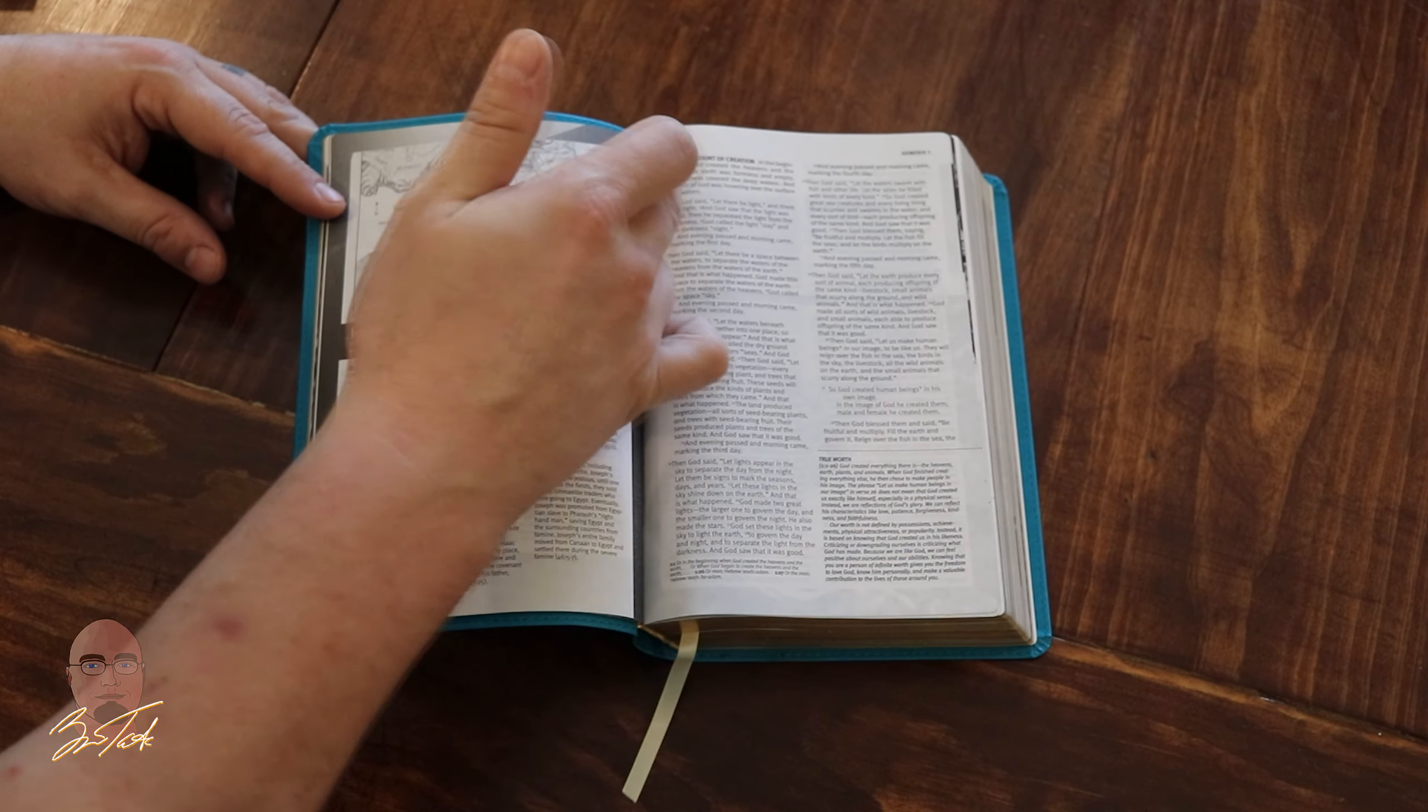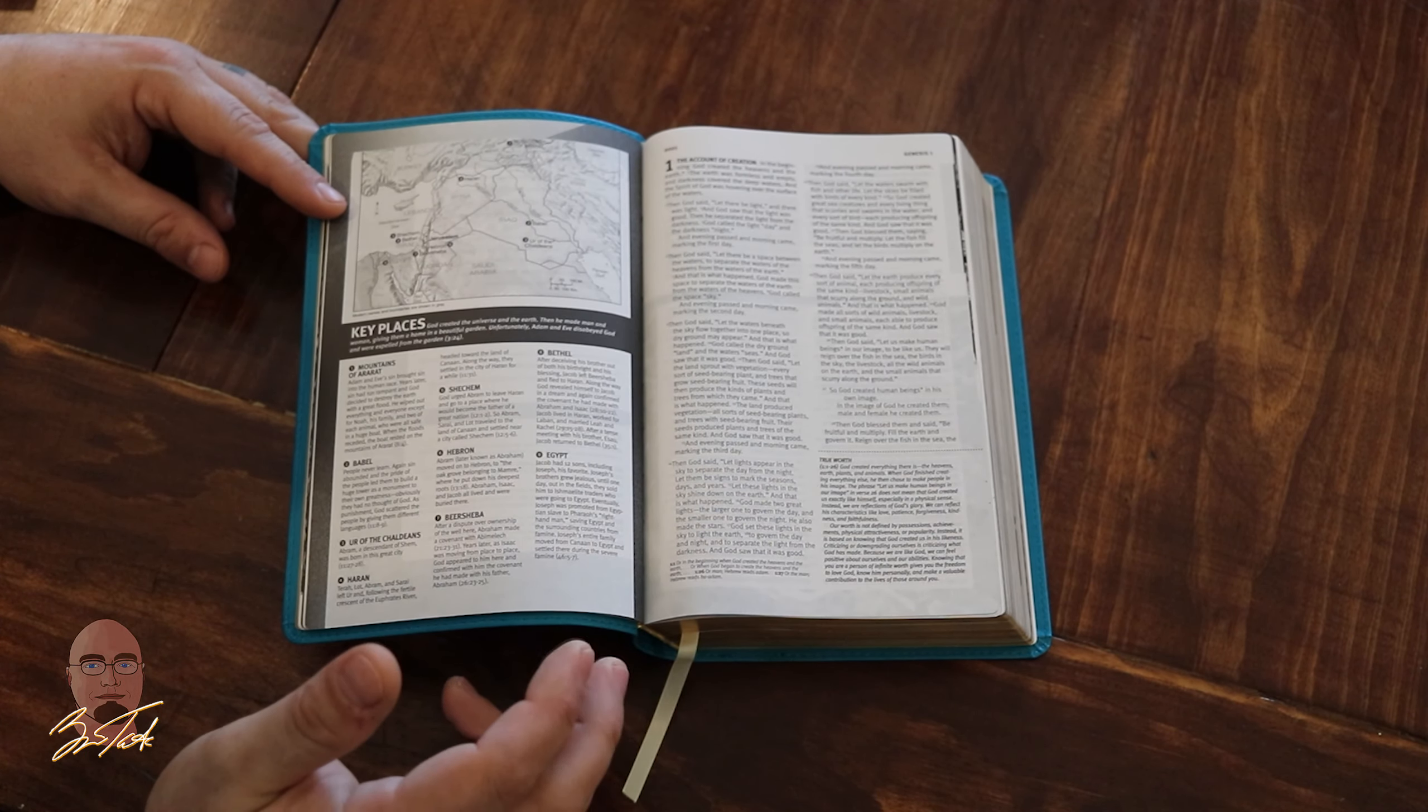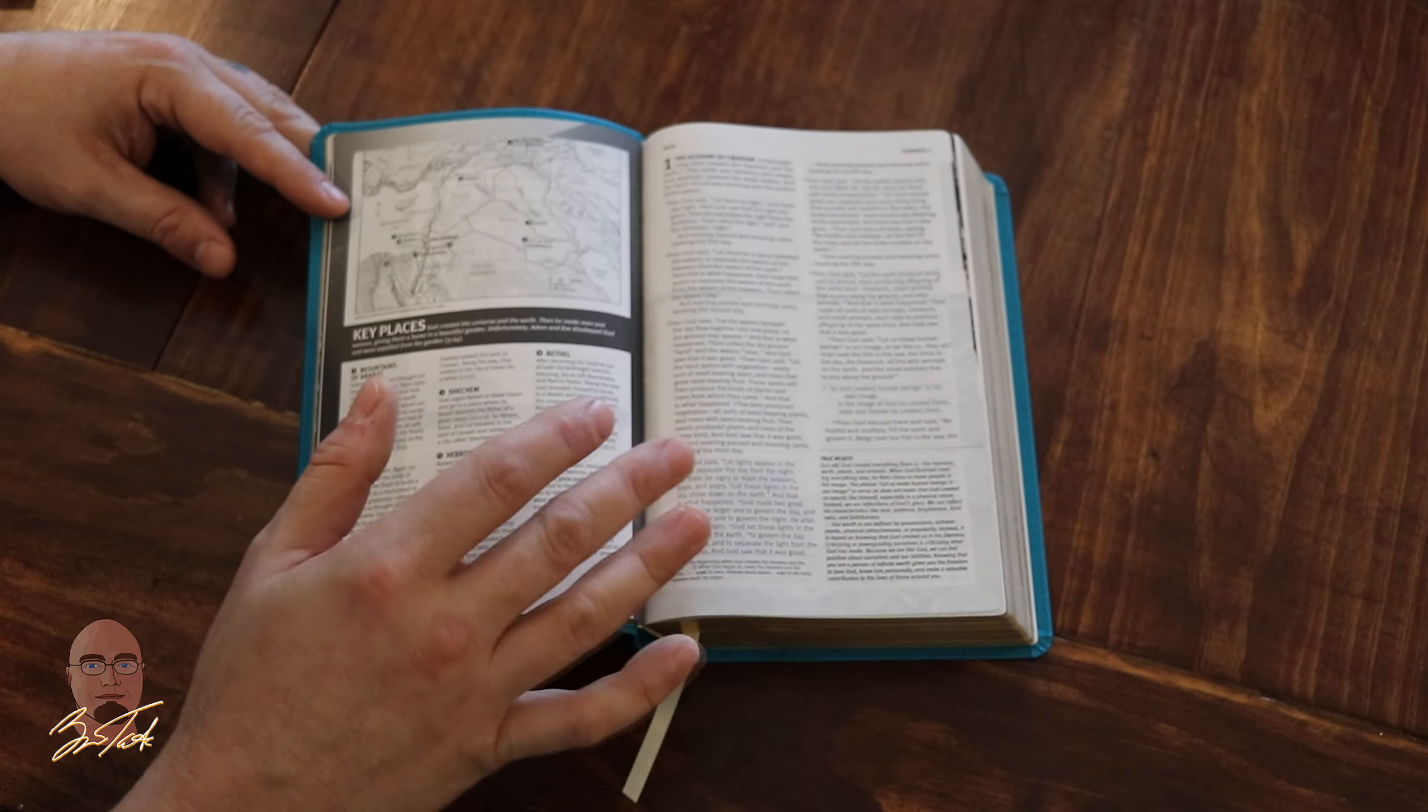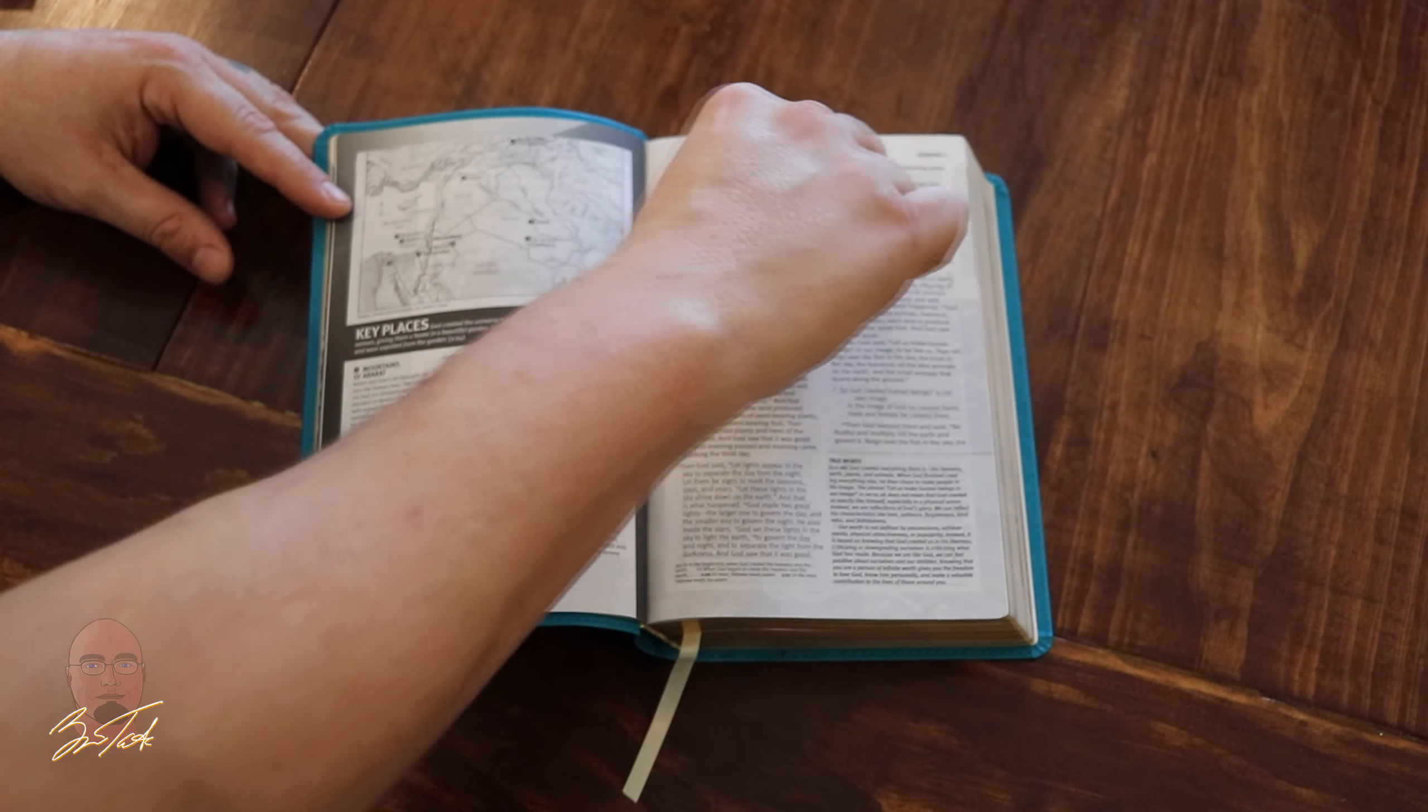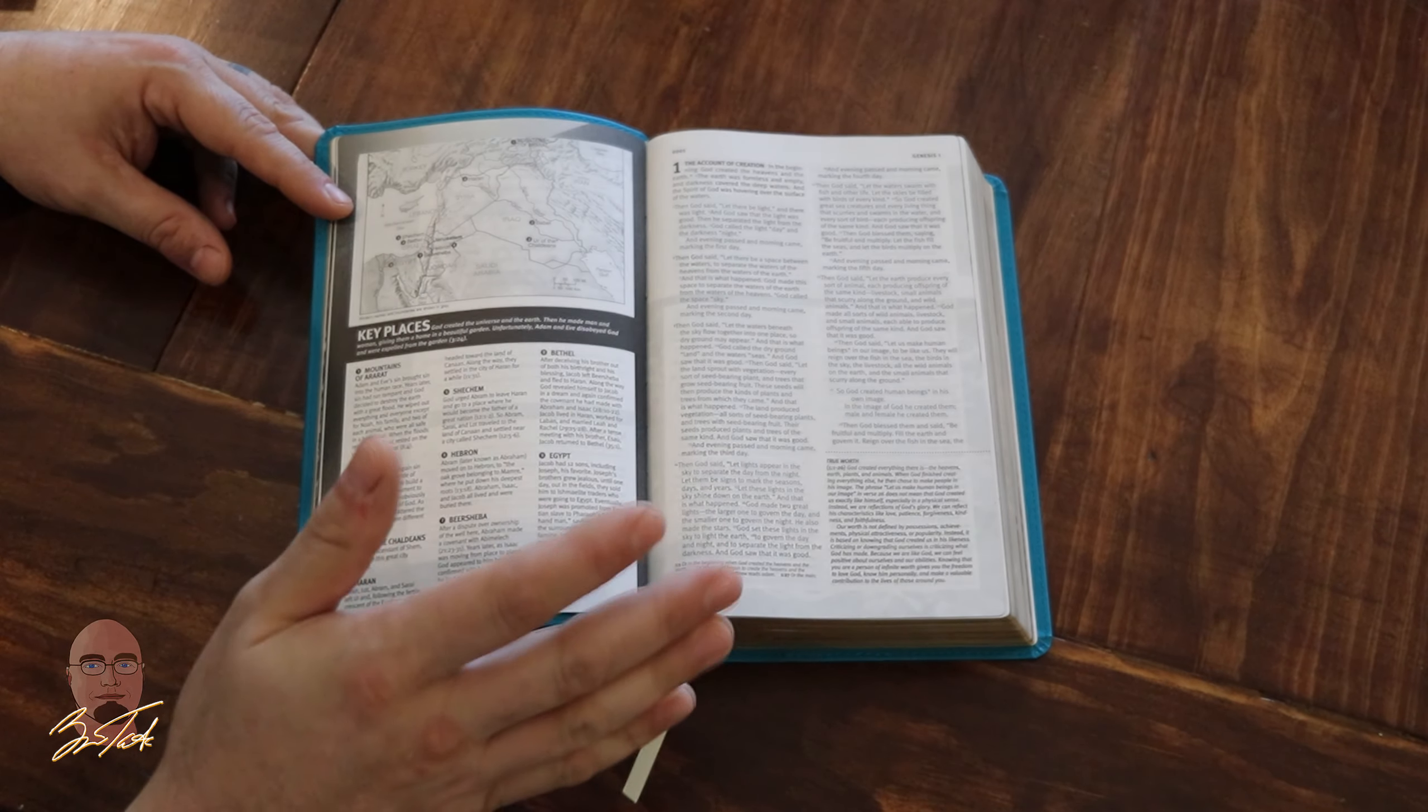Here's an example of the text. It's a double column paragraph format. I do like the double column because it breaks up the words per line. Here's your notes in the corner; that's all the notes you get for this section, Genesis 1. Usually you'll have one little strip of scripture and tons of notes, so I'm glad that they didn't go overboard with the notes.